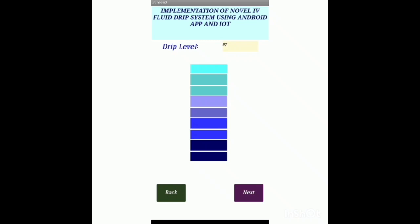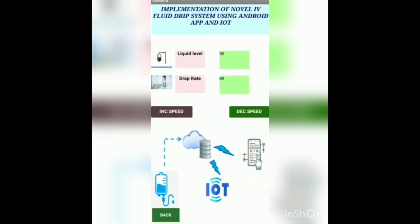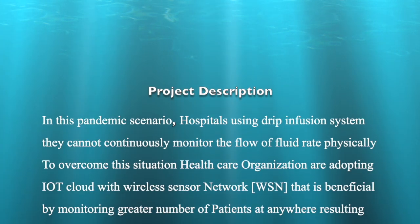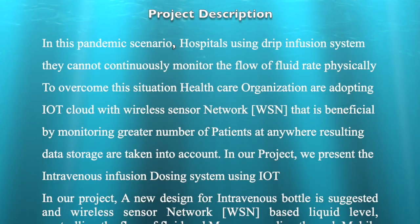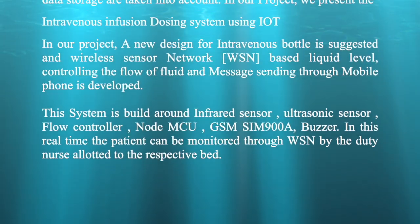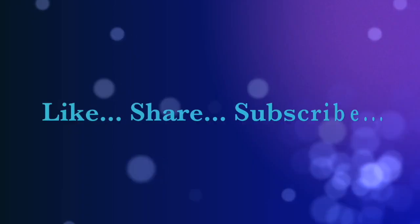In Screen 3, it displays the current fluid level, which indicates its percentage. If the fluid level decreases, the fluid level in the app will also get decreased. The color level displays the current level of the fluid, and we can continuously monitor the drip level through it. Screen 4 displays the drop count and liquid level. The fluid level and drop rate are continuously updated in the developed app. We can also increase and decrease the flow of the fluid from this screen.